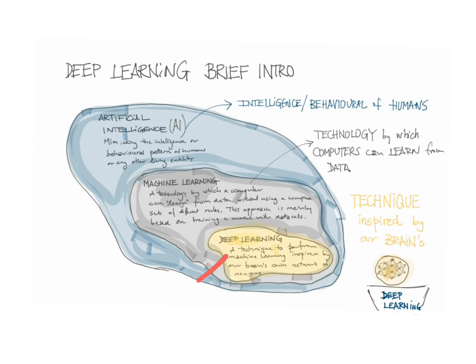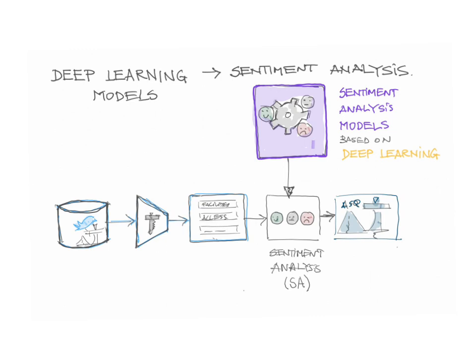Let me explain briefly what deep learning is. Deep learning is part of machine learning, and machine learning is part of artificial intelligence. These are three terms used quite often these days. Artificial intelligence trains to mimic the intelligence and behavior of humans. Machine learning is the technology by which computers can learn from data. And deep learning, which is used in this research, is the technique inspired by our brains.